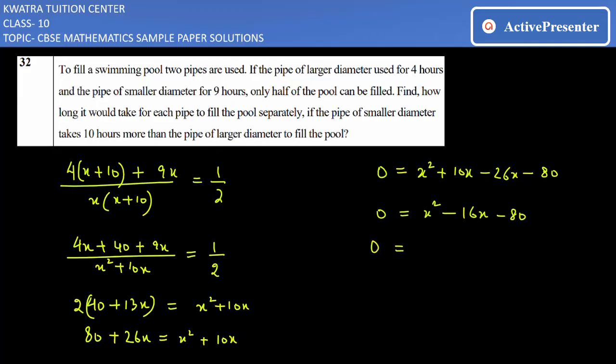Now you have the value. You can factorize this equation so that you can get the value of x. So factorize 80 such that 16 is formed - it will be 4 and 20. So it will be nothing but x² - 20x + 4x - 80.